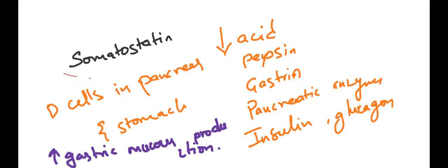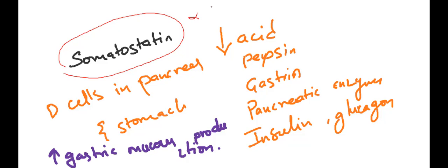Coming to the last hormone, somatostatin. Somatostatin is an antagonist of gastrin. It is derived from the D-cells in the pancreas and stomach.